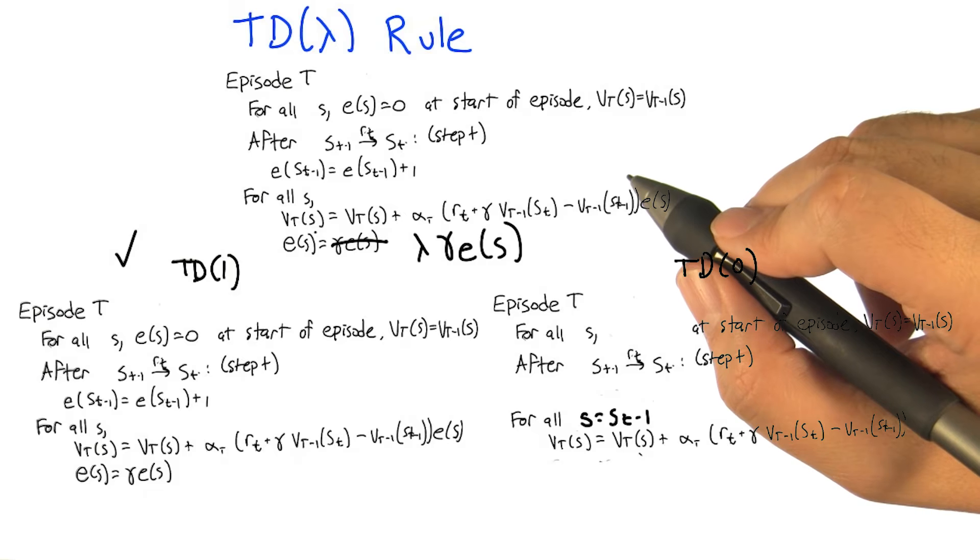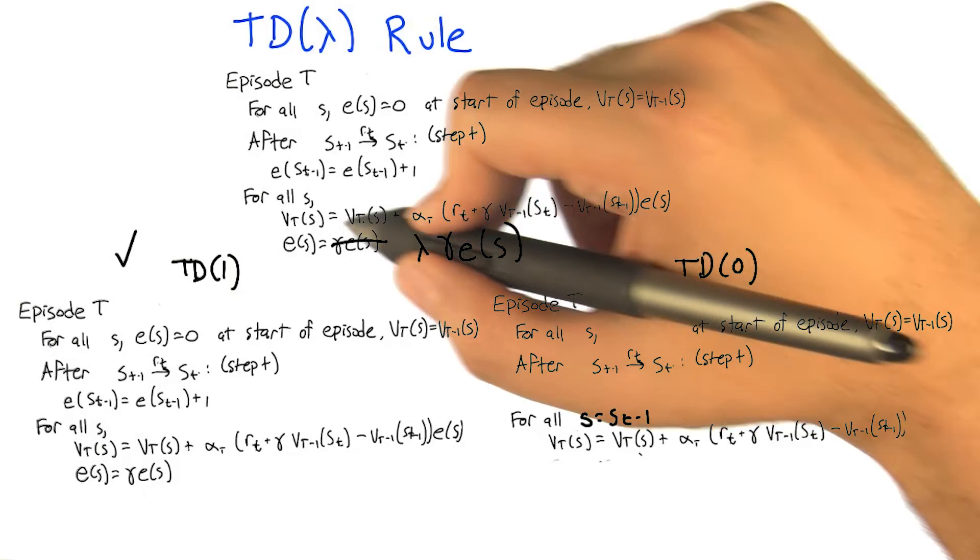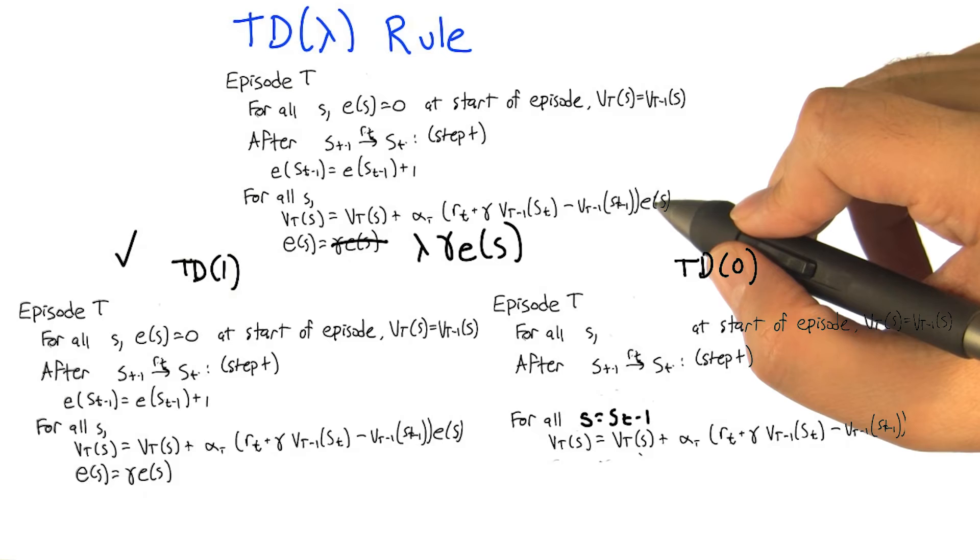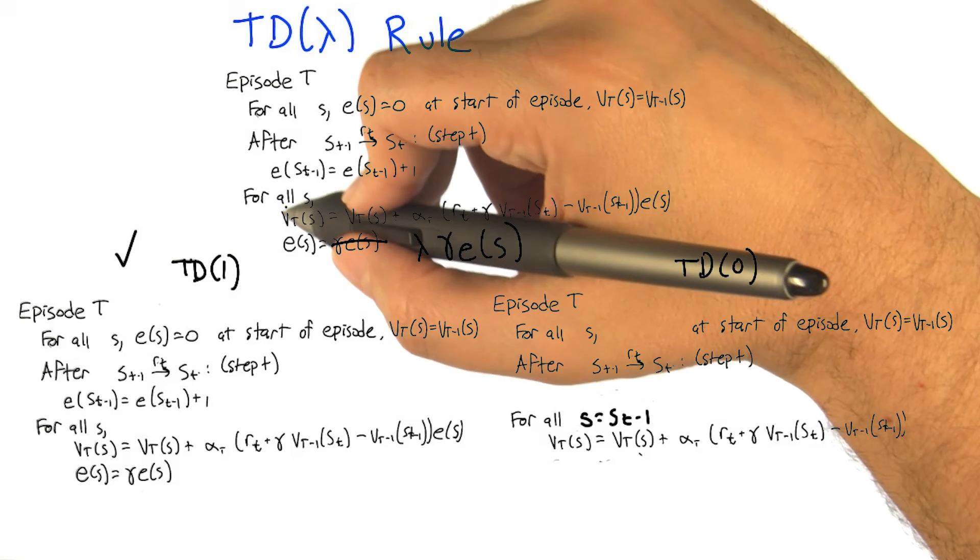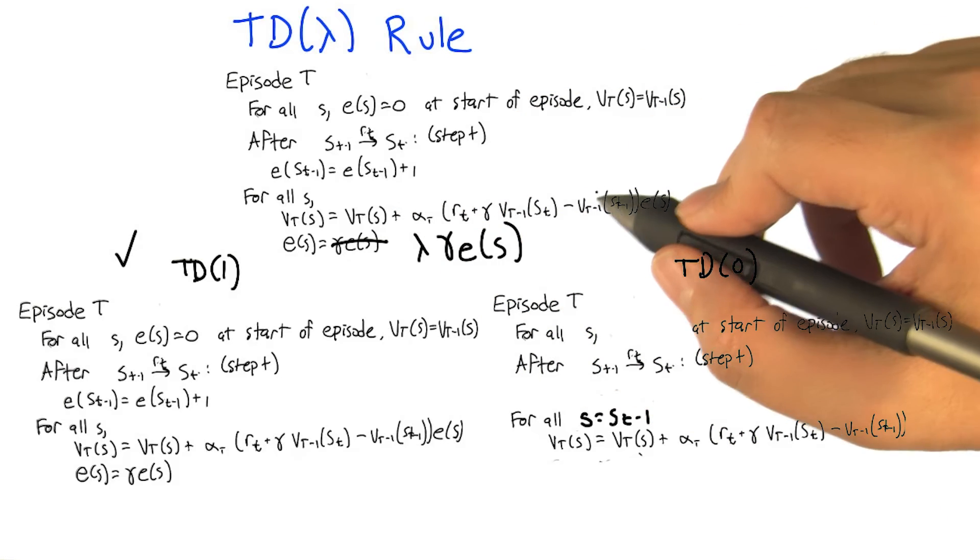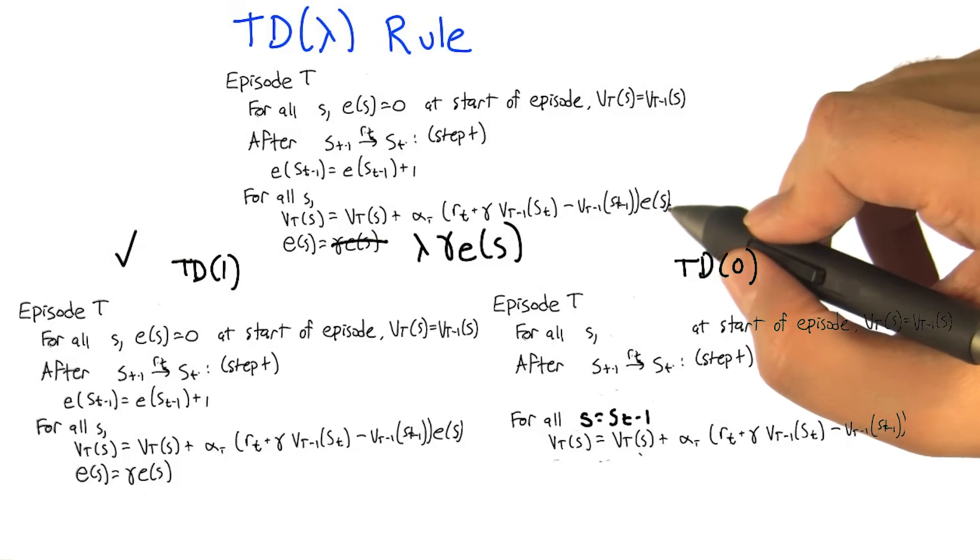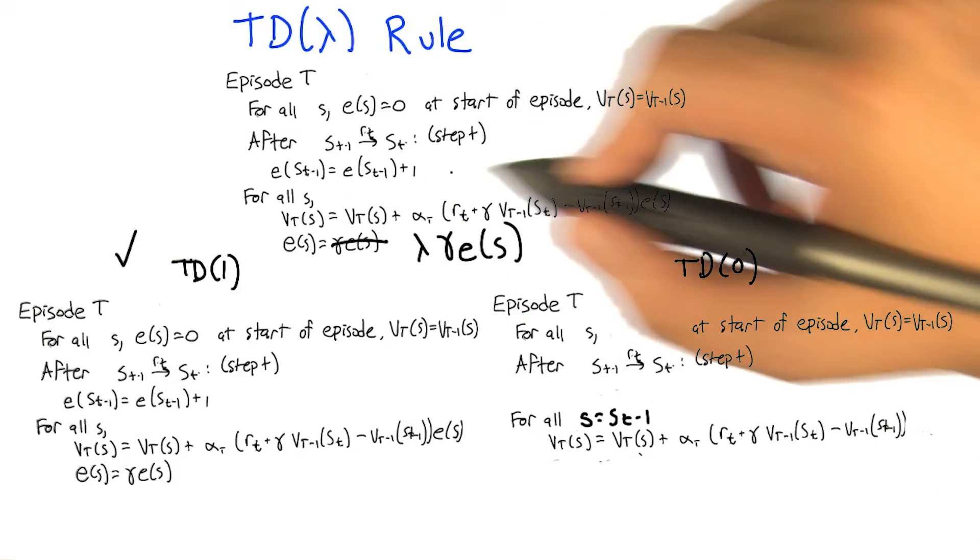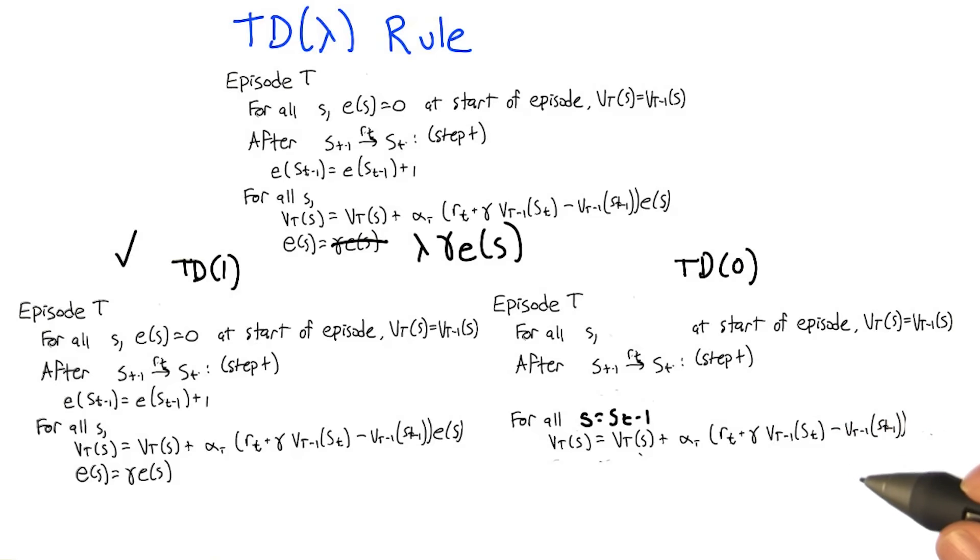Right. And we update v_t(s) to be this thing times, well, it'll be 0 for everything except for s_t minus 1. Good. And then we will take the eligibility for that state and set it equal to 0. Right. So in particular on this update, the eligibility is 0 for all the s is not equal to s_t minus 1. So nothing gets changed there. And for the one where it is equal to s_t minus 1, this eligibility is 1. So we just do it, you know, we just update based on that, which is exactly what we have for the TD(0) rule.